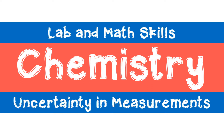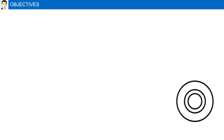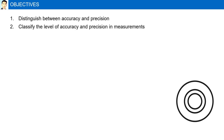In this lesson, we will cover uncertainty in measurements. We will distinguish between accuracy and precision, classify the level of accuracy and precision in measurements, and finally calculate percent error.